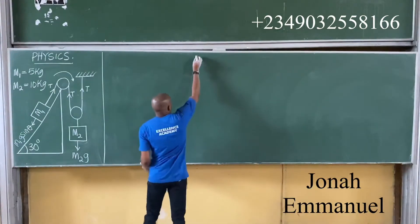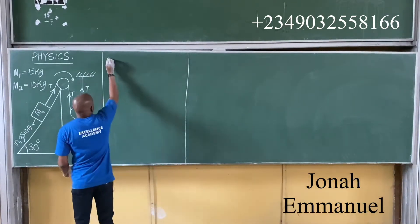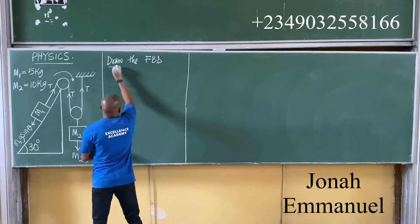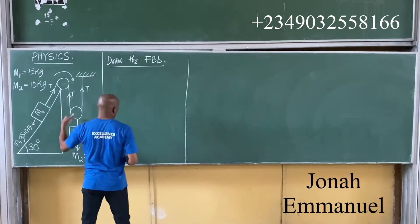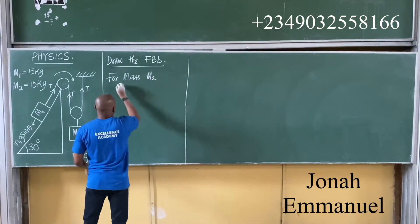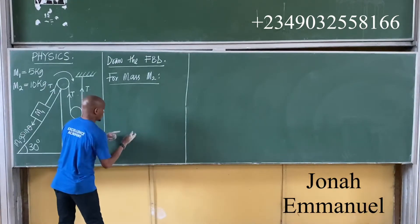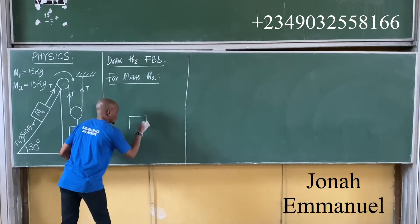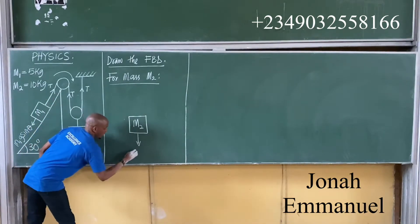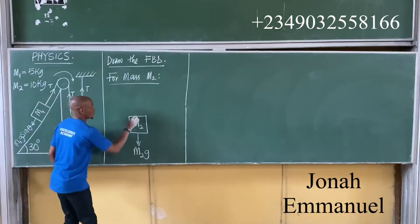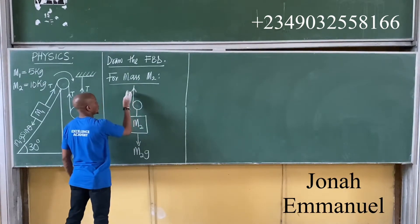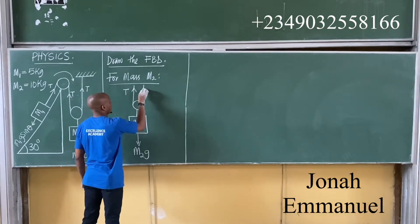Alright, let's now get the free body diagram. Let's draw the free body diagram. Here's what I got — let's draw with this one here, the bigger mass. So for mass M2, what do I have? I have this one here. So look at this now — I'm having M2. Below M2 I'm seeing M2G. Above M2 I have a pulley system. This one going up here — we call this T.